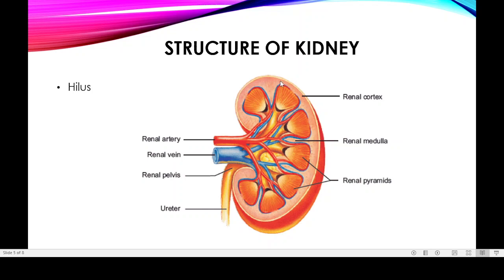If we look at the longitudinal section of the kidney — cutting it into two halves — the outer part of the kidney is dark red in color, which is known as the renal cortex. The inner region is pale red in color, which is known as the renal medulla. The renal medulla contains cone-shaped structures known as renal pyramids.